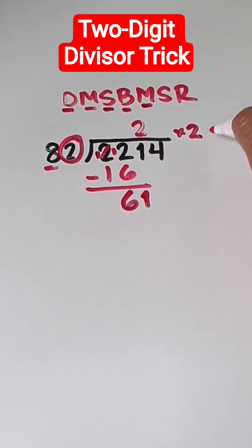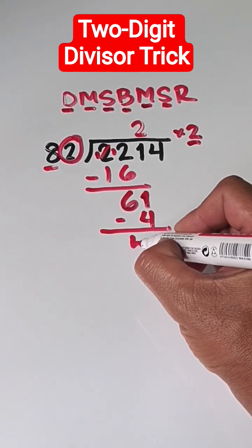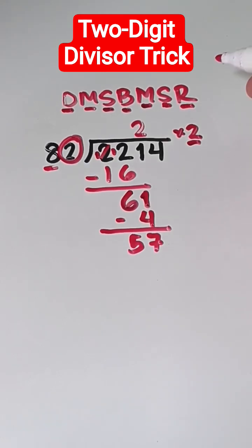Multiply. So, we have a multiplier of 2. Multiply this to the quotient 2, that is 4. And then, subtract. 61 minus 4, that is 57. And then, repeat the process.